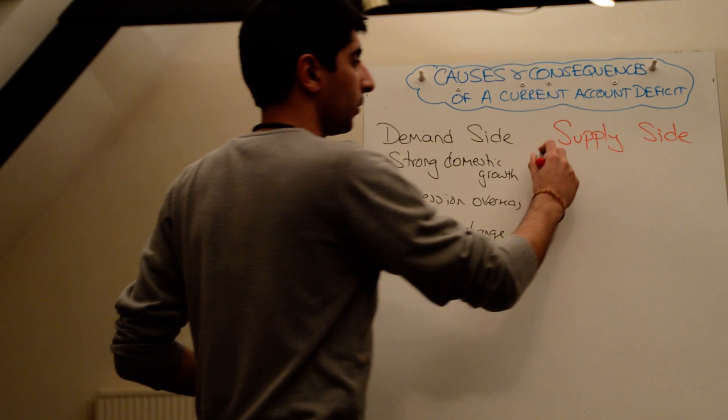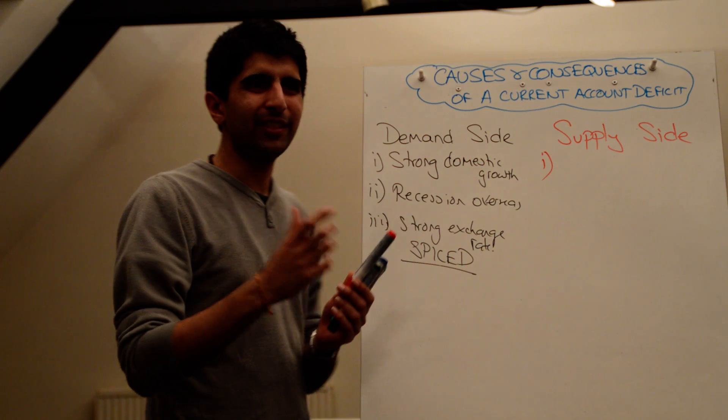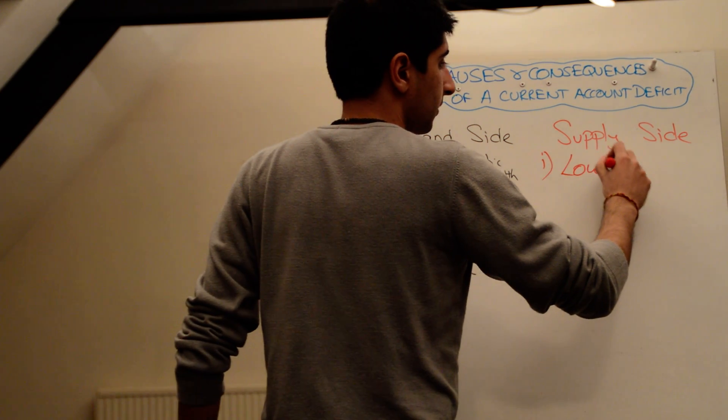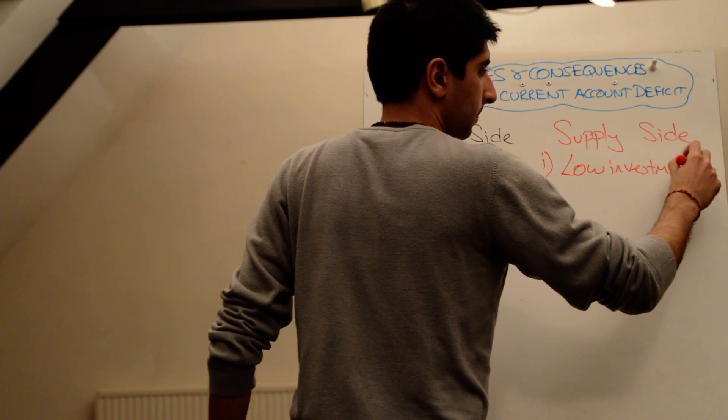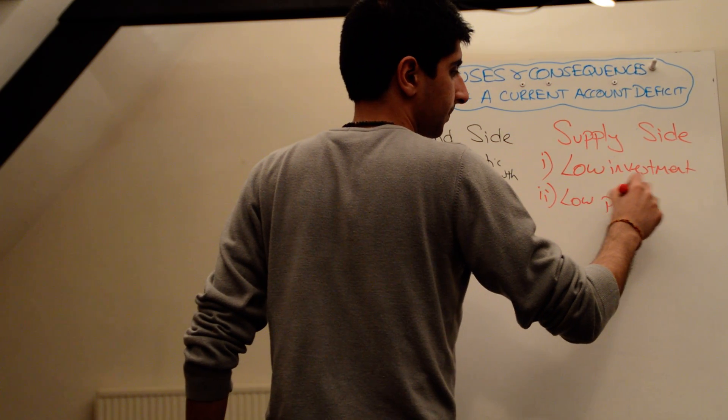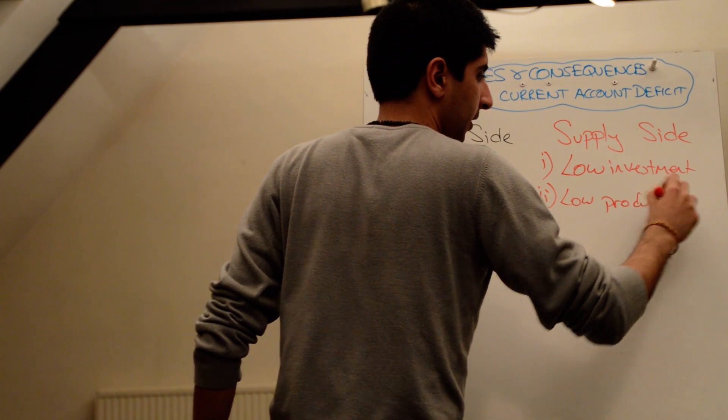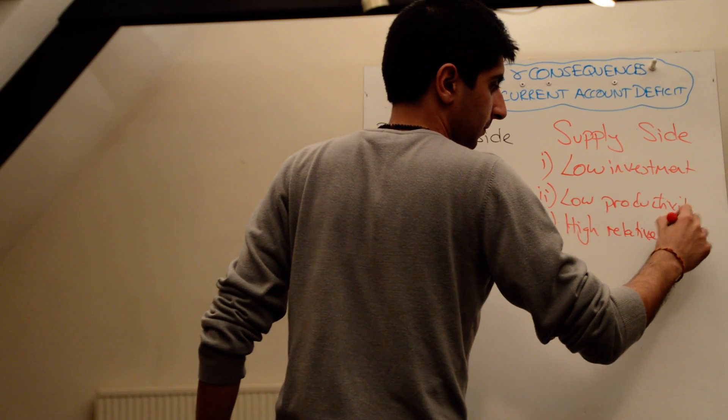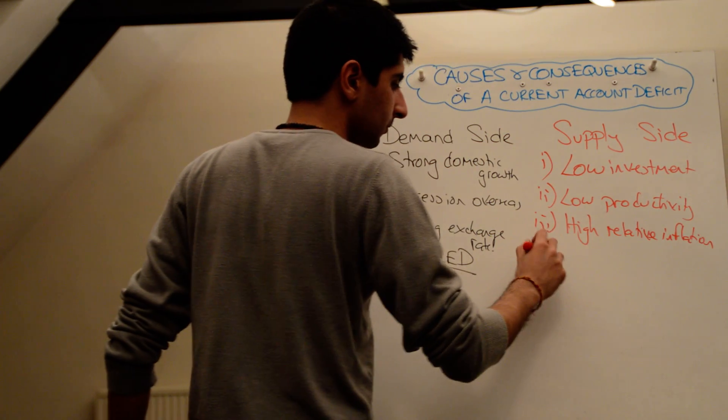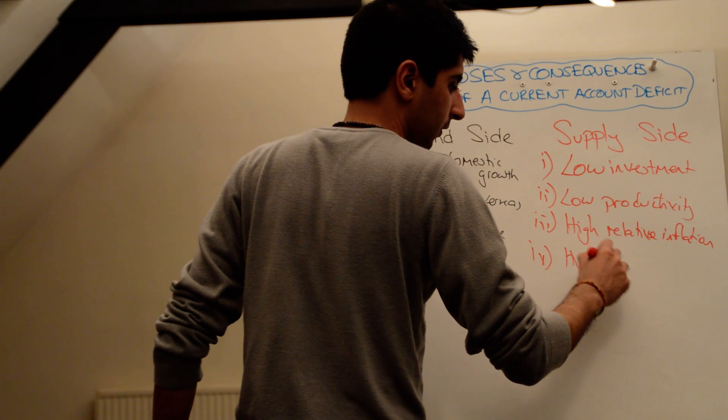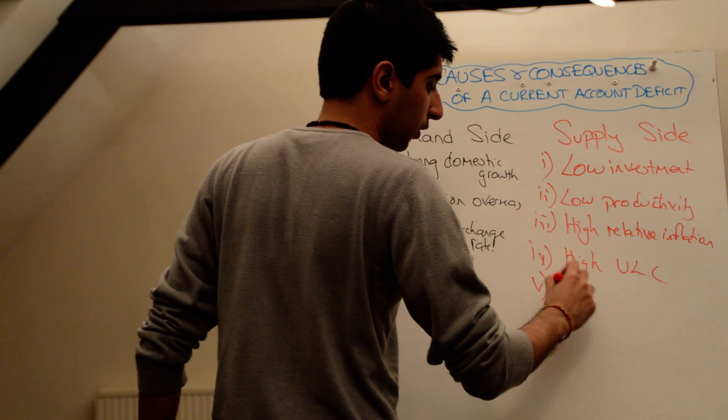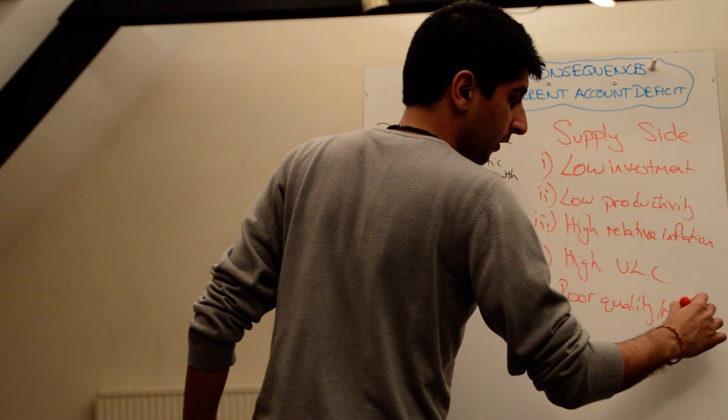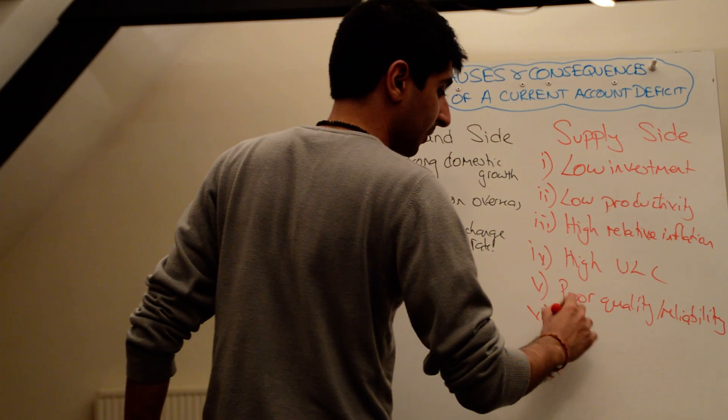There are also supply side reasons which might cause it. So, supply side reasons are all about, basically, the relative cost of our exports. And how they're not really going to be competitive. And that might be because of low investment. That might be because of low productivity. It might be because of high relative inflation. It might be because of high unit labour costs. It might be because of poor quality of goods made. It might be reliability as well. So, poor quality or poor reliability. Or, it might be something as simple as a depletion of resources.